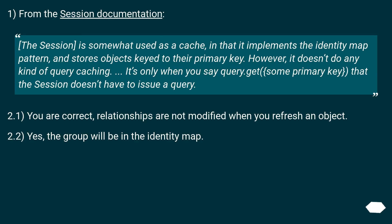From the session documentation: 'The session is somewhat used as a cache, in that it implements the identity map pattern and stores objects keyed to their primary key. However, it doesn't do any kind of query caching — it's only when you say query.get(some_primary_key) that the session doesn't have to issue a query.' 2.1: You are correct — relationships are not modified when you refresh an object. 2.2: Yes, the group will be in the identity map.